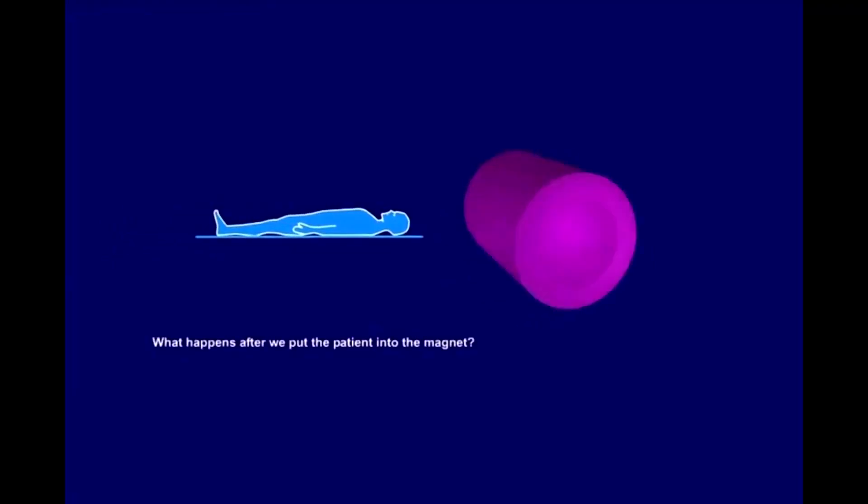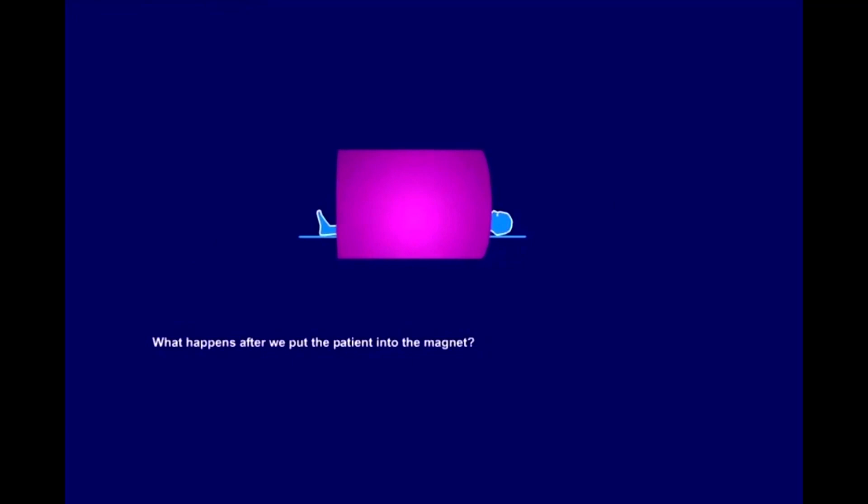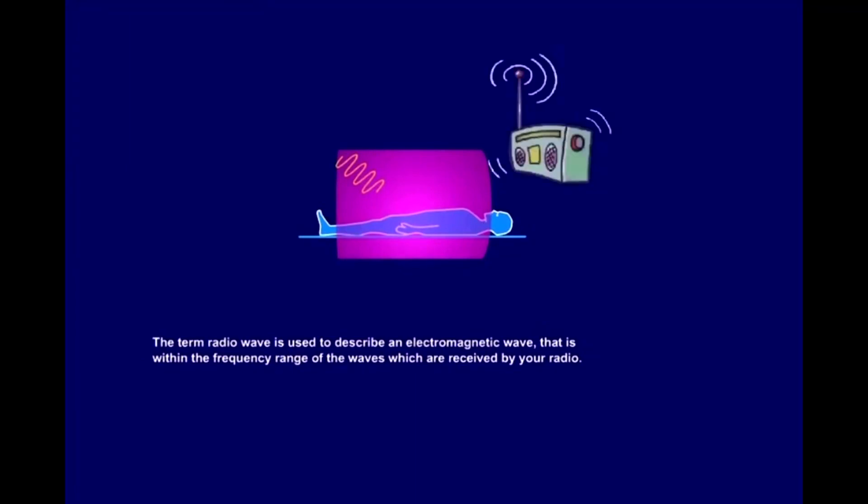What happens after we put the patient into the magnet? We send in a radio wave. The term radio wave is used to describe an electromagnetic wave that is within the frequency range of the waves which are received by your radio.